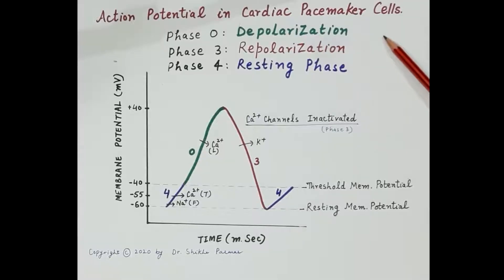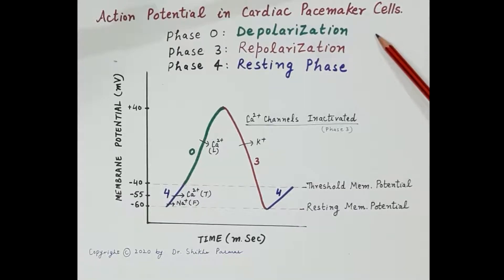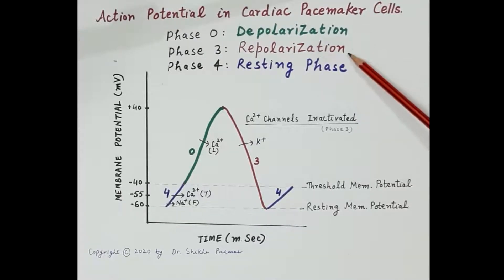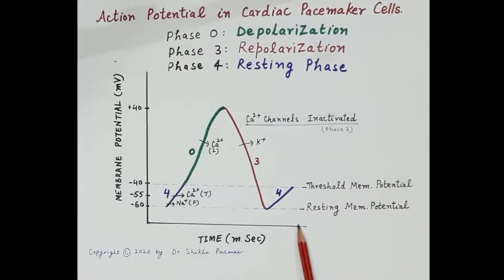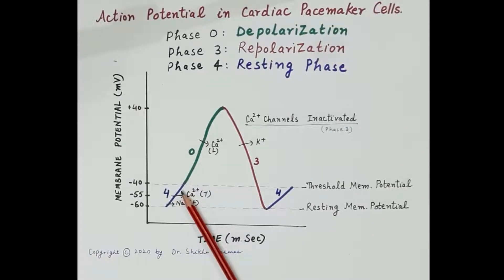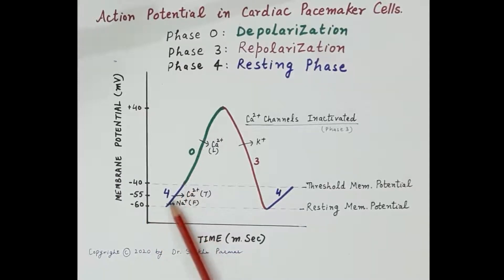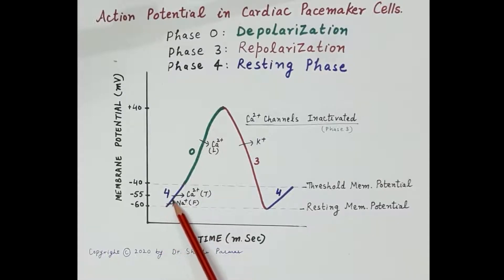The action potential in the nodal cells — the pacemaker cells of the SA node and AV node — has three phases: phase 0 (depolarization), phase 3 (repolarization), and phase 4 (resting phase). The resting membrane potential is minus 60 millivolts, but it is highly unstable. The resting membrane potential gradually keeps rising because of the influx of 'funny' sodium ions and the influx of calcium ions — it gradually rises and is not stable at minus 60 millivolts.